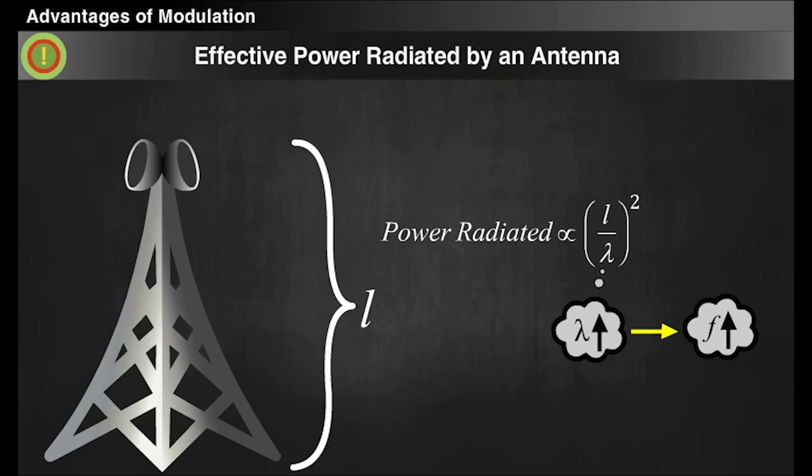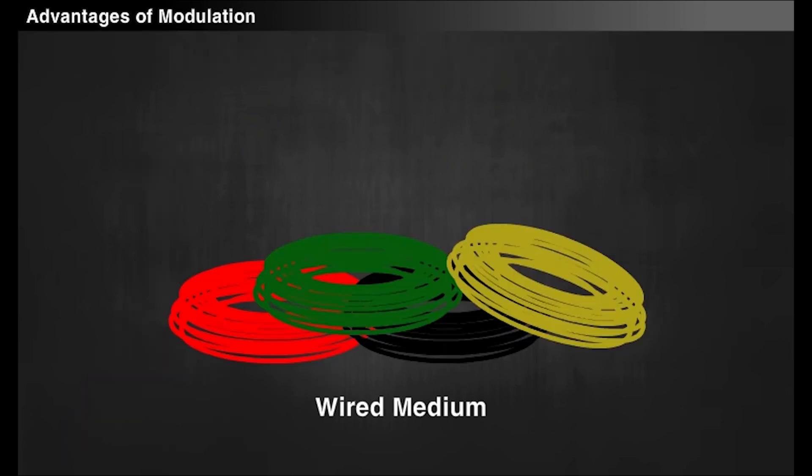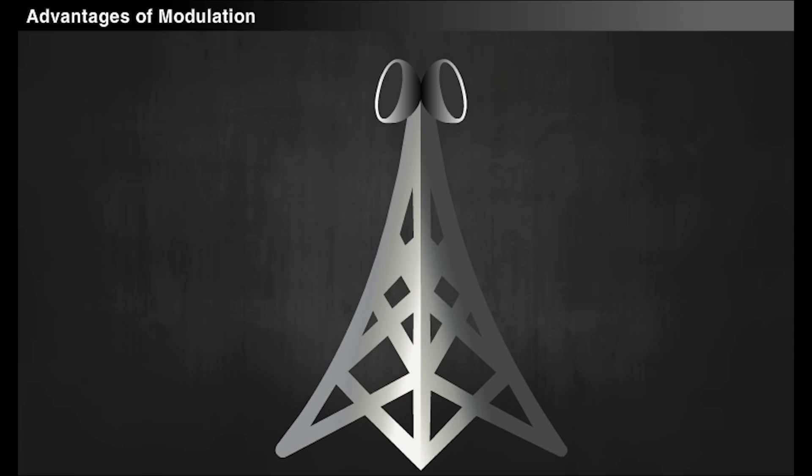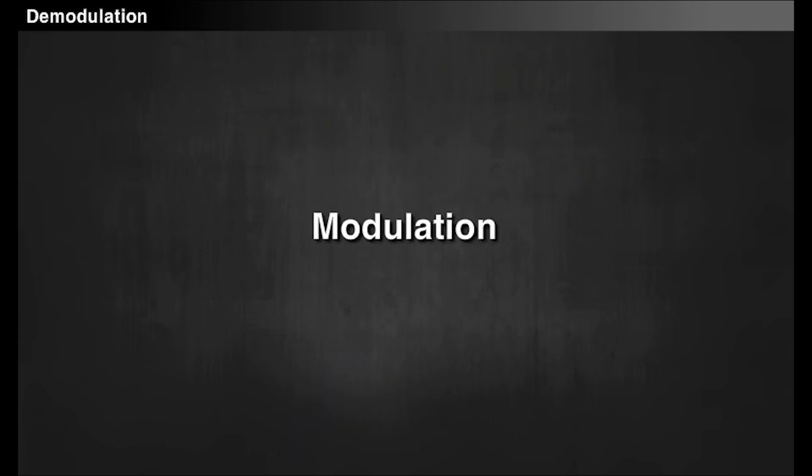By using high frequency transmission, we can achieve high power radiation without changing the antenna height. Modulation helps us to replace the wired medium with wireless medium communication. Also, we can achieve a high range of communication by using modulation. So far, we have studied about modulation and the need for modulation.